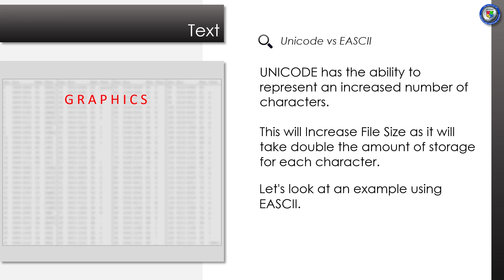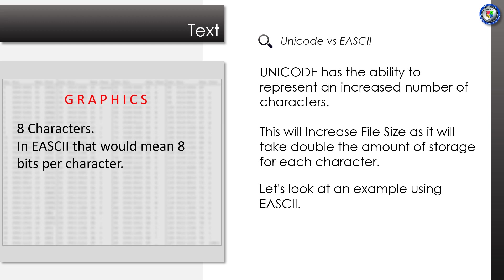Let us look at an example using extended ASCII. We will calculate the storage of the word 'graphics'. It has 8 characters. In extended ASCII that would mean 8 bits per character. 8 times 8 would give us 64 bits. If we divide that by 8 to convert to bytes, we then have 8 bytes.